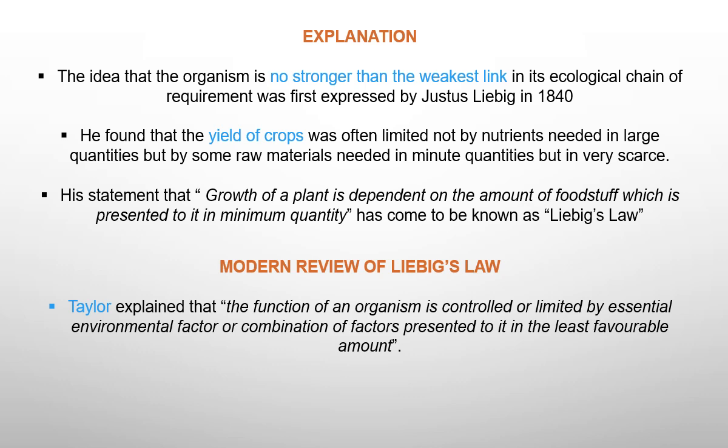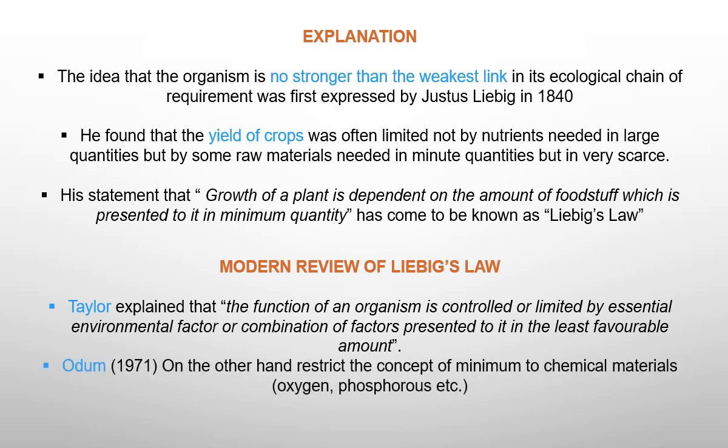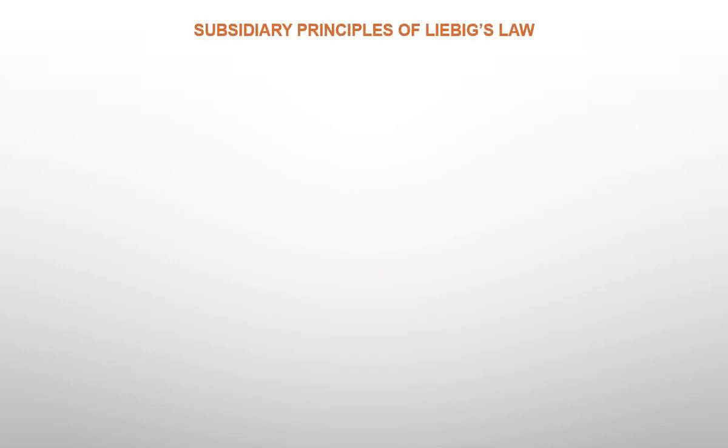There are some reviews associated with Liebig's Law. Taylor explained that the function of an organism is controlled or limited by the essential environmental factor or combination of factors presented to it in the least favorable amount — meaning factors become effective during some critical periods but may not act continuously. Odum in 1971 restricted the concept of minimum to chemical materials like oxygen and phosphorus, and gave emphasis to inclusion of the limiting effect of maximum in the law of tolerance.